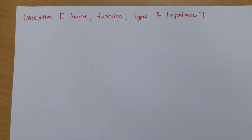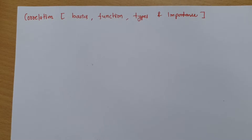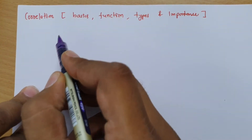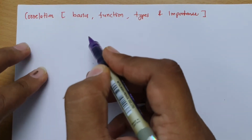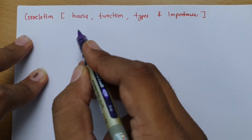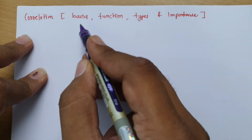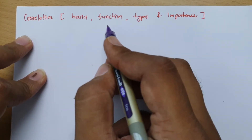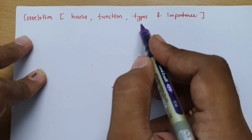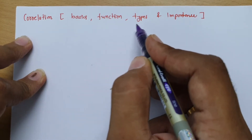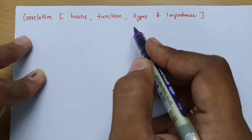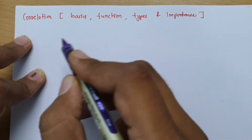Welcome to the Signal and Systems lecture series. In this session, I will be explaining correlation. These are my session outlines: I will first explain the basics of correlation, then cover the function of correlation, then discuss two types of correlation — autocorrelation and cross correlation — and we will see their importance.